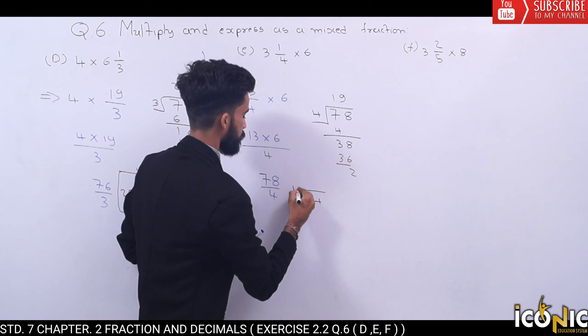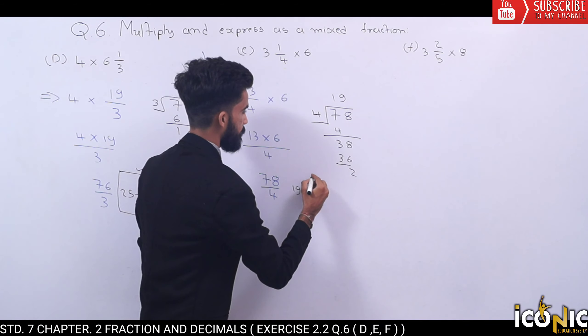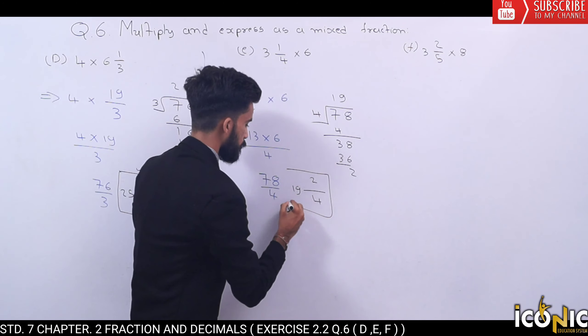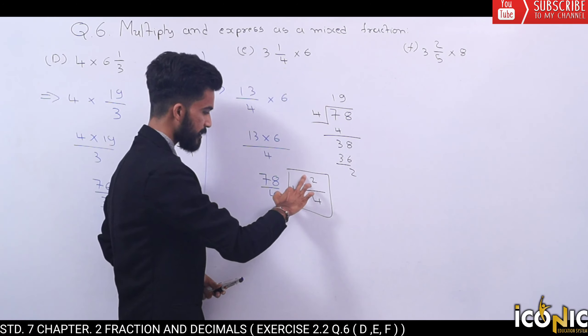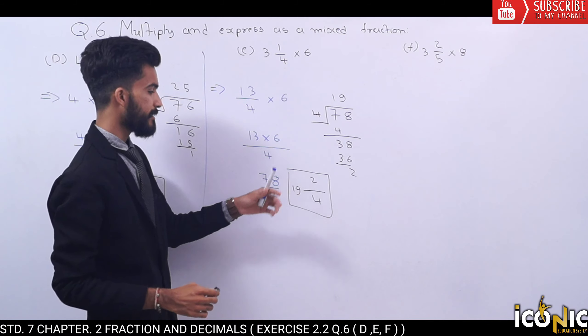19 remainder 2 over 4. 19 times 4 is 76, plus 2 is 78. So 19⅔ is our answer.